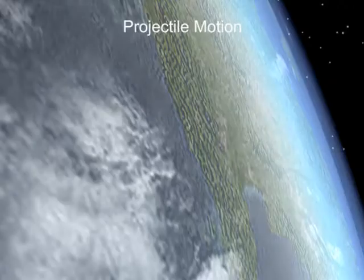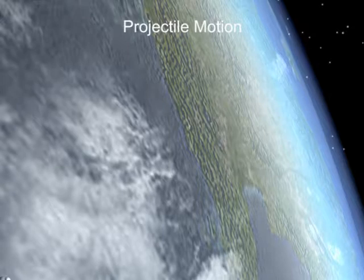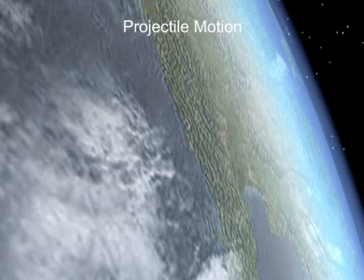This is hypothetical, of course, because that speed is much too fast for a person to throw, and traveling that fast within the Earth's atmosphere would turn the baseball into cinders.